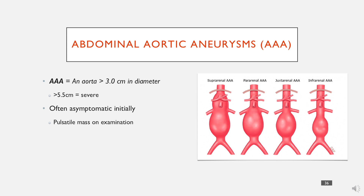On abdominal examination, you will notice a pulsatile mass, pulsing as any other artery would. Abdominal aortic aneurysms are usually infrarenal, and triple-A's are classified in relation to the renal arteries. Infrarenal is most common. They can extend to become juxtarenal — right next to the renal arteries without progressing further — then pararenal, where they involve the takeoff of the renal arteries, and finally suprarenal, where they extend above and beyond the renal artery.